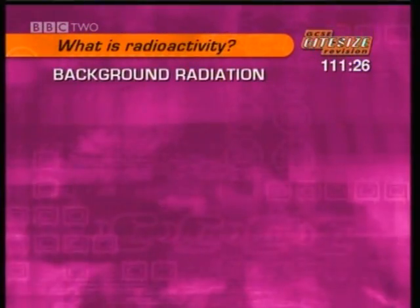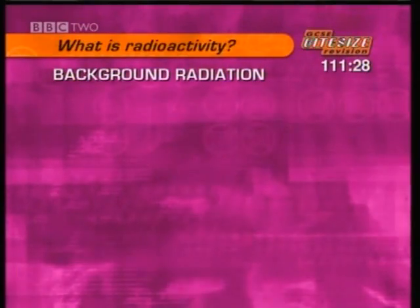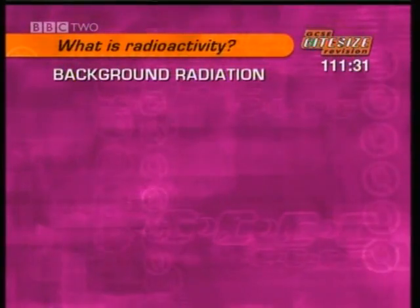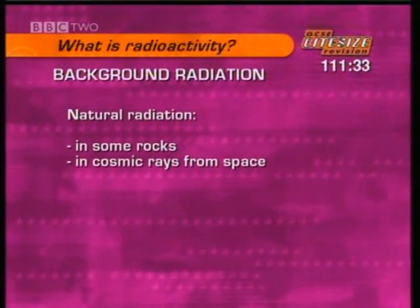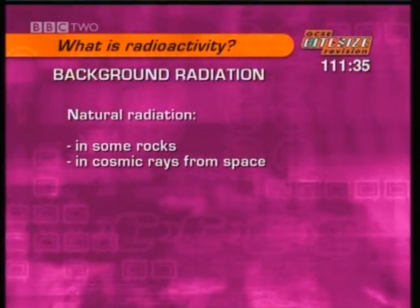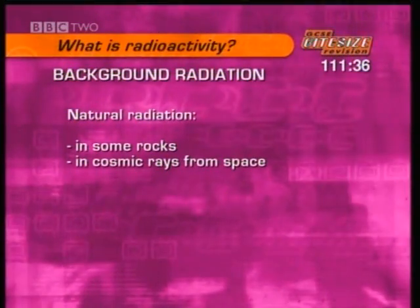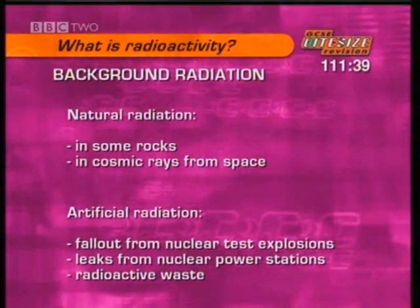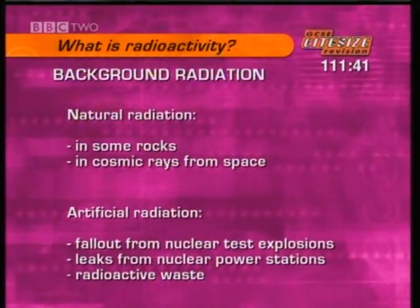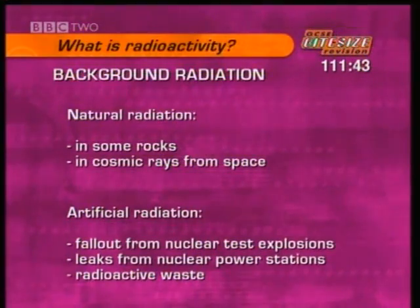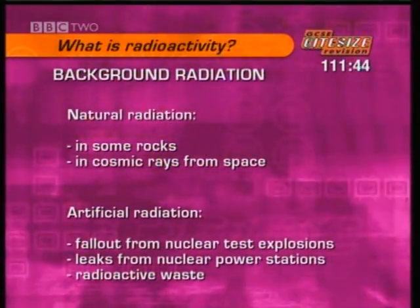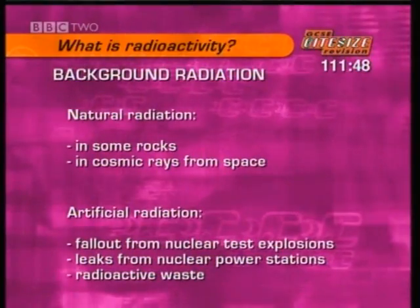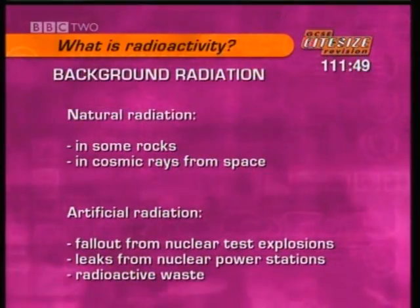Small amounts of radioactivity are all around us — this is called background radiation. Background radiation occurs naturally in some types of rock and in cosmic rays from space. We are also exposed to increasing levels of artificial radiation, from fallout from nuclear test explosions, leaks from nuclear power stations, and from radioactive waste from industrial processes.